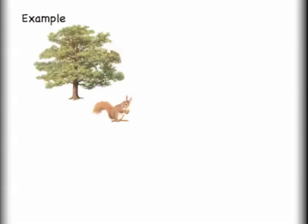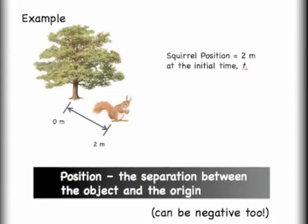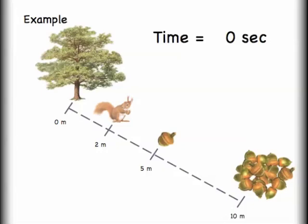We're going to start with a little example here. We've got a squirrel, we've got a tree. We're going to say that the tree is the origin. I get to pick the origin, this is just convenient for us. I've got my squirrel right now that is located at a position of two meters. Remember that position is the separation between the object and the origin. Position is what we will often graph. It's important to note that it can be negative.